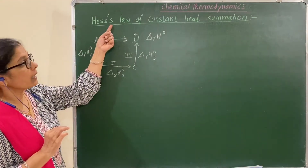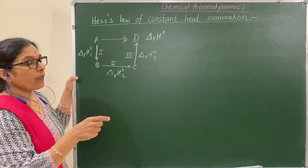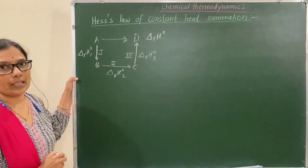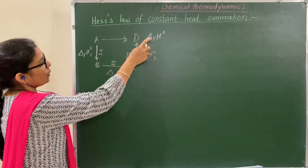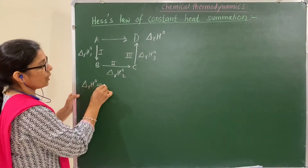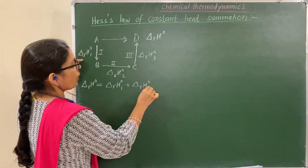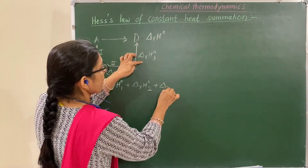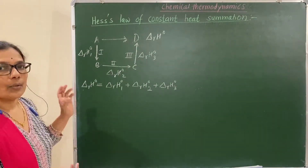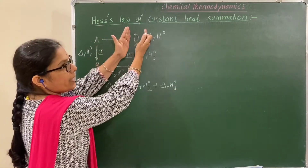According to Hess's Law, the change in enthalpy of the reaction is the same whether it is carried out in one step or in several steps. That means delta H equals delta H1 plus delta H2 plus delta H3. This is because enthalpy is a state function — it depends only on the initial state and the final state.